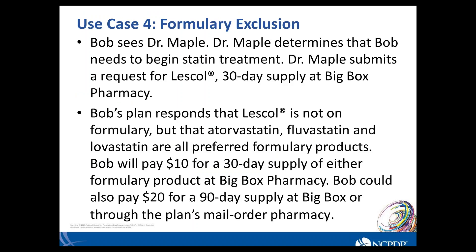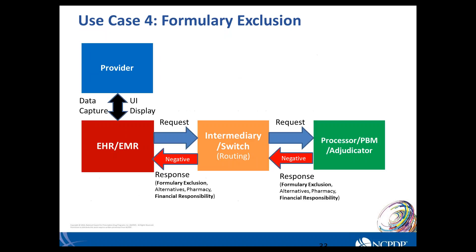Use case four is formulary exclusion, which is a little different. Bob goes to Dr. Maple, who says it's time to start statin treatment and submits a request for Lescol for a 30-day supply at Big Box Pharmacy. The plan responds that Lescol isn't on formulary, but atorvastatin, fluvastatin, and lovastatin are all preferred formulary products. Bob will pay $10 for a 30-day supply of either at Big Box Pharmacy, or $20 for a 90-day supply either at Big Box or through the mail order pharmacy. The formulary exclusion message and financial responsibility are required, with alternative and pharmacy information also returned.